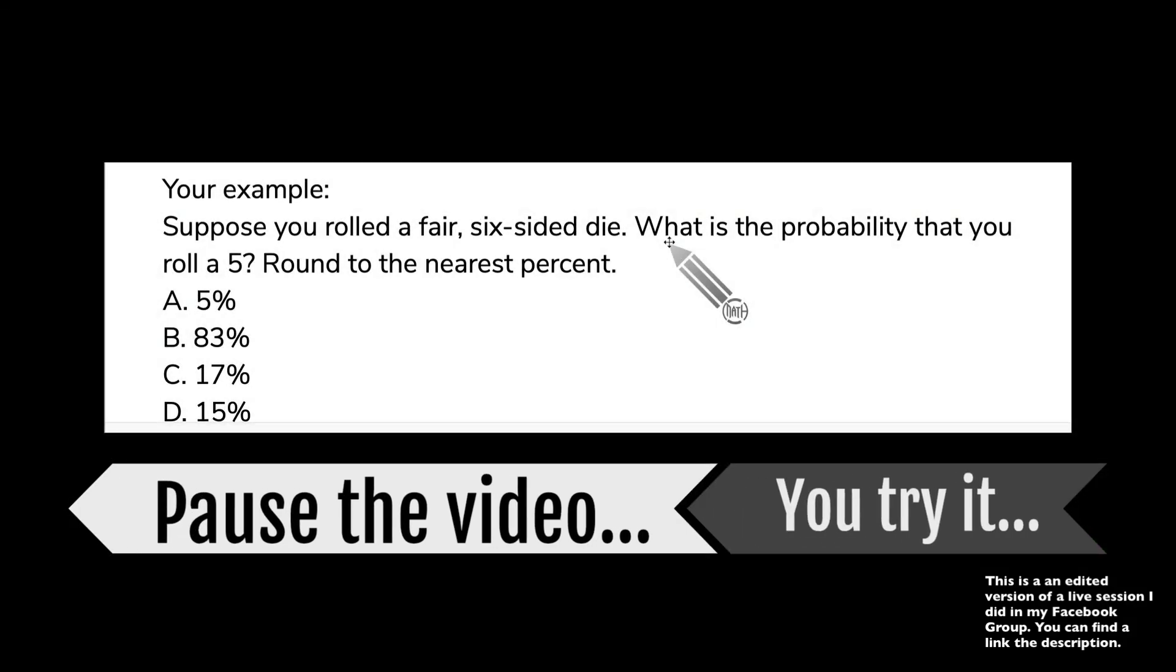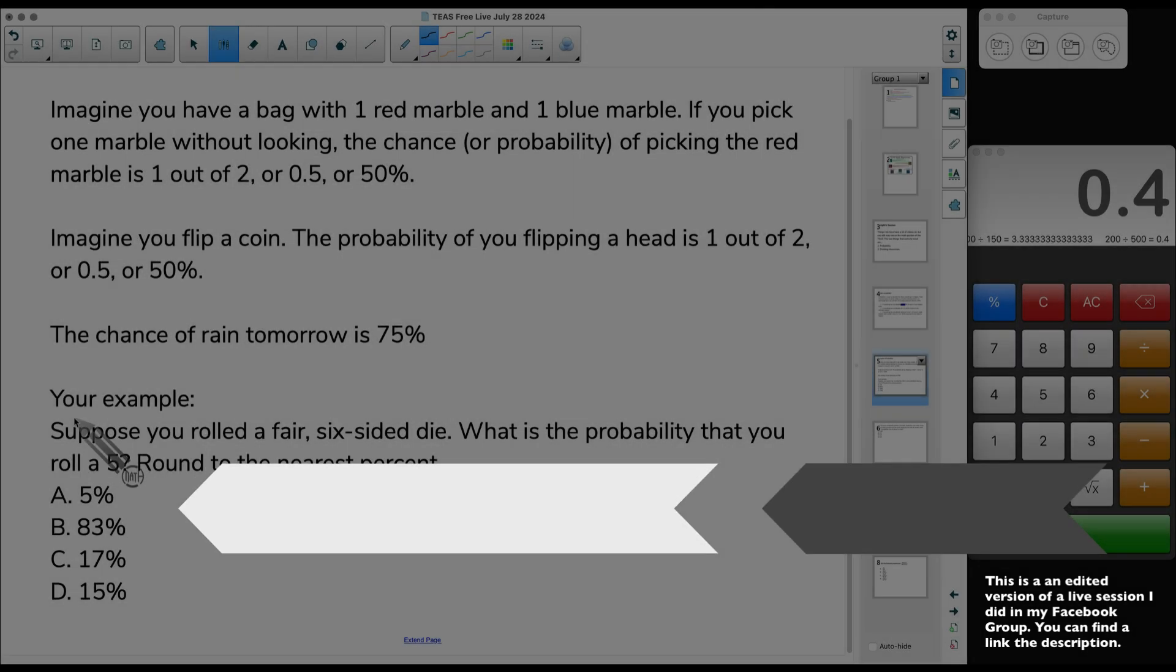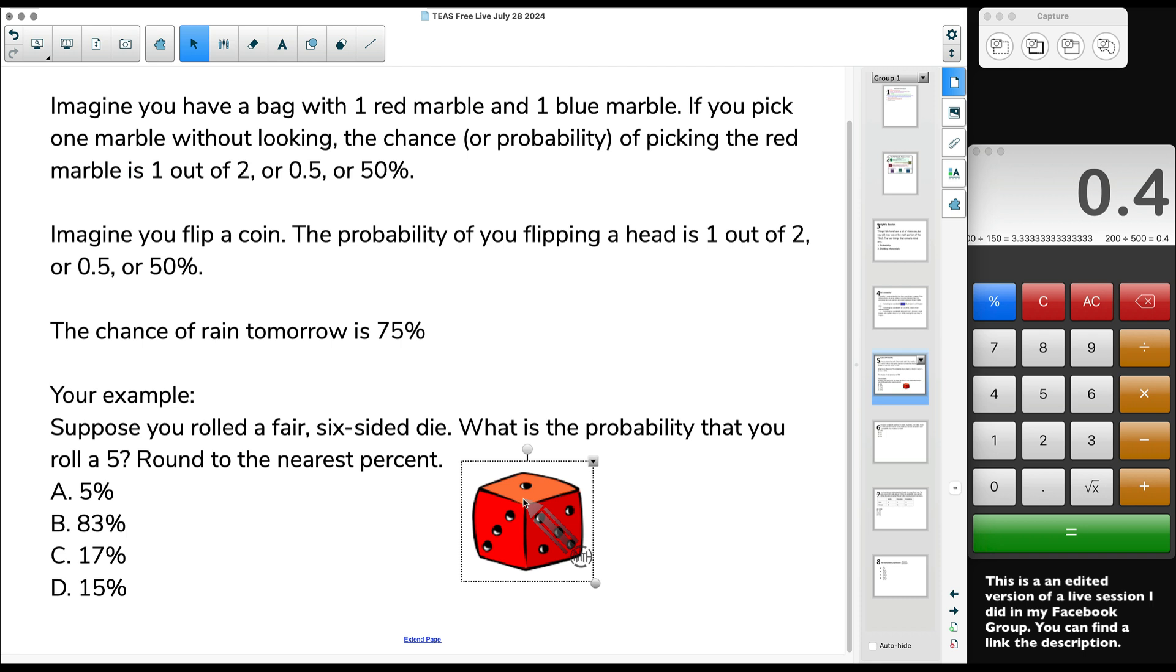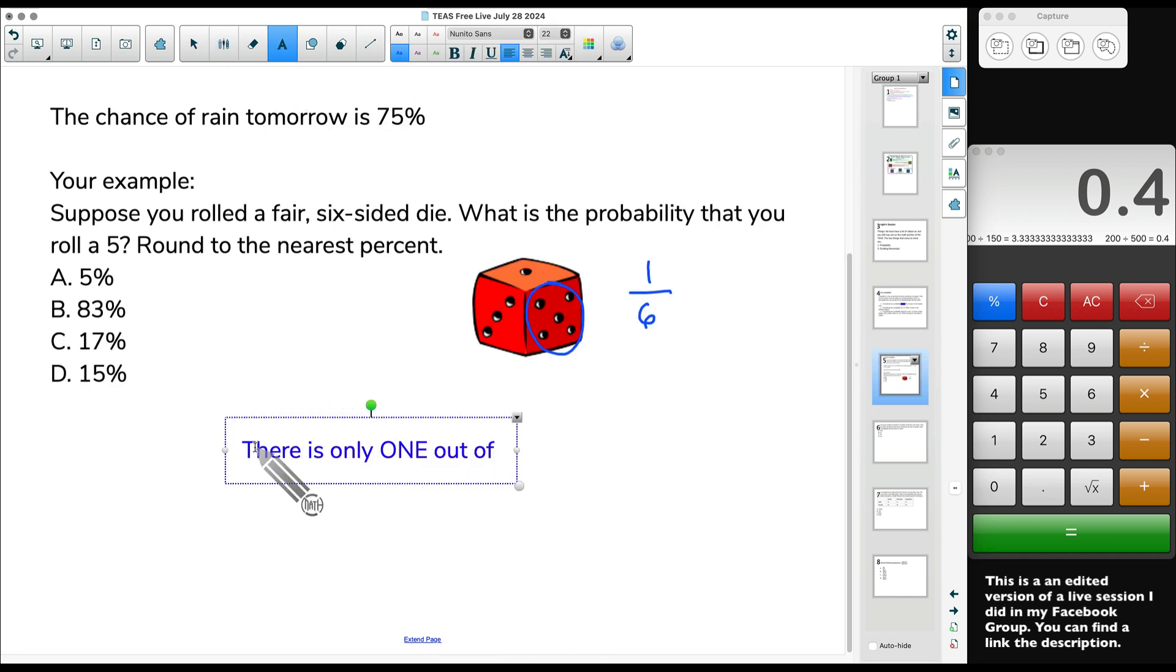Suppose you rolled a fair six-sided die. What is the probability that you roll a 5? If you roll a die, you got a 1 on one side, a 2 on another, 3 dots, then 4 dots, then 5 dots, then 6 dots. So the probability of you rolling a 5, there's only one side, only one side out of a total of six sides. Some of y'all might have thought, oh, rolling a 5 is going to be 5 out of 6. No, there's only one side on a dice that has 5 dots on it. So there's only 1 out of a total of 6 sides.